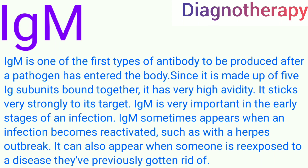IgM is one of the first types of antibody to be produced after a pathogen has entered the body. Since it is made up of five Ig subunits bound together, it has very high avidity — it sticks very strongly to its target. IgM is very important in the early stage of an infection and sometimes appears when an infection becomes reactivated, such as with a herpes outbreak.